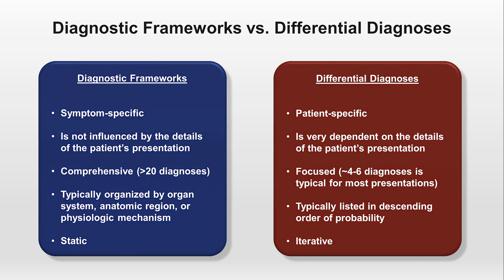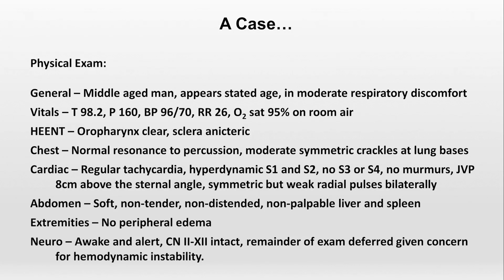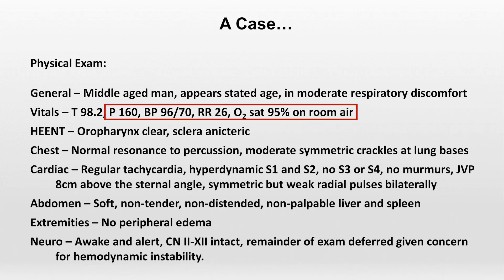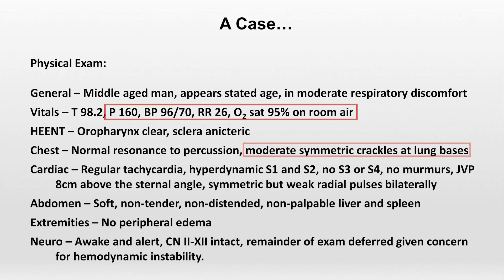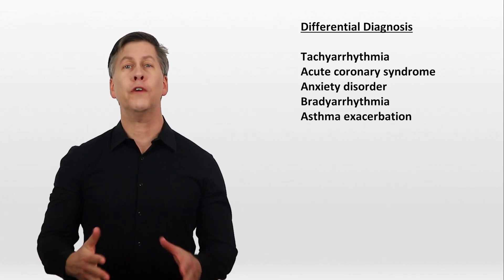So on that note, let's return to the case to get more info and update our differential. Here's the physical exam. He's a middle-aged man who appears his stated age and is in moderate respiratory discomfort. Vitals are most notable for a pulse of 160, blood pressure of 96 over 70, respiratory rate of 26, and oxygen saturation of 95% on room air. He has moderate symmetric crackles at both lung bases. The tachycardia is regular, with hyperdynamic S1 and S2 — meaning those sounds are louder than normal. JVP is moderately elevated, and pulses are weak.